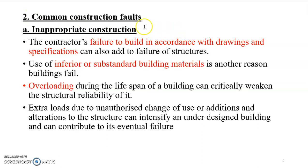Next is common construction faults. The first one is inappropriate construction. This includes contractors failing to build in accordance with drawings and specifications. Once we take into consideration drawings and specifications, we will use architectural engineers and architects. Therefore, it will be a failure to work not in accordance with what contractors are given.